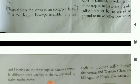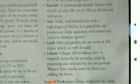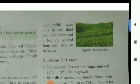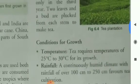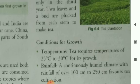The tea bush yields leaves only from the third year after planting. Two leaves and a bud are plucked from each stem to make tea.